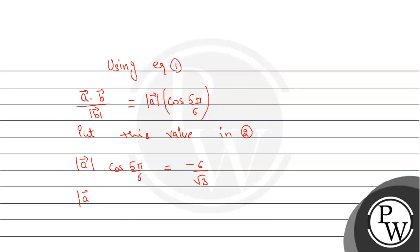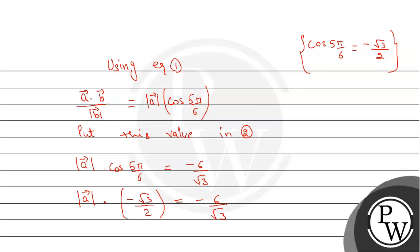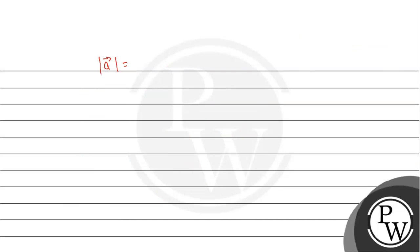Now, cos(5π/6) ki value is minus square root 3 upon 2. So it becomes |A| into minus square root 3 upon 2 equals minus 6 upon square root of 3. Therefore, magnitude of A vector equals minus 6 upon square root 3 into 2 upon minus square root of 3, which gives minus 4 — so magnitude of A vector is equal to 4.